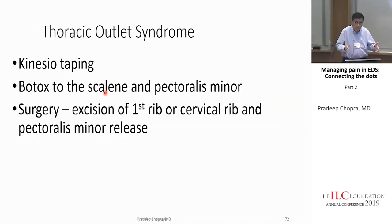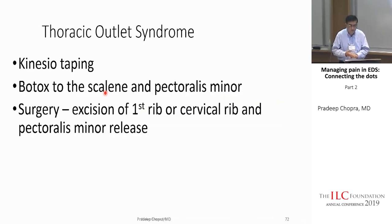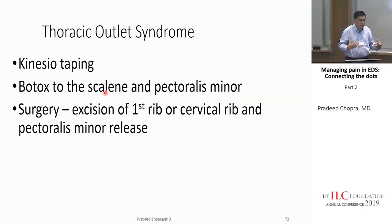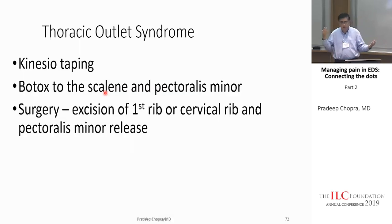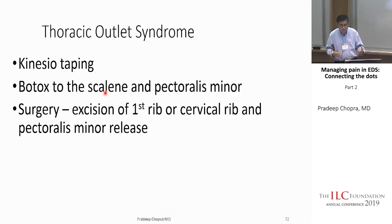Getting the diagnosis of thoracic outlet syndrome is key. You need someone familiar with it — usually physiatrists or thoracic surgeons can diagnose it easily using clinical tests like Adson's test and Halstead test done in the office, without fancy MRIs. There's a very high incidence of thoracic outlet syndrome in EDS from my patient series. Not all are serious or need major treatment, but it is present.